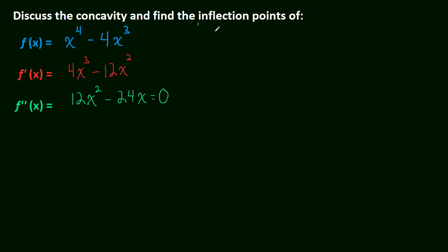When the actual derivative has a horizontal slope, you have an inflection point. That's the same thing as saying the second derivative is equal to zero, because the second derivative is the slope of the first derivative.